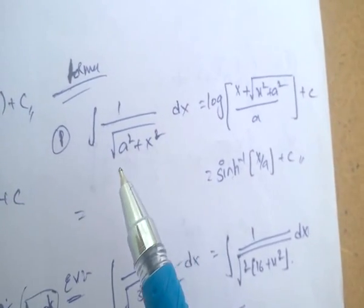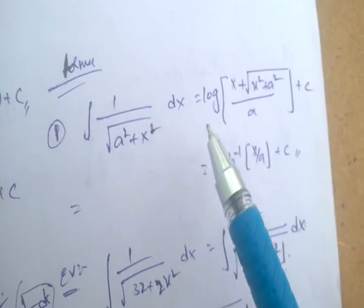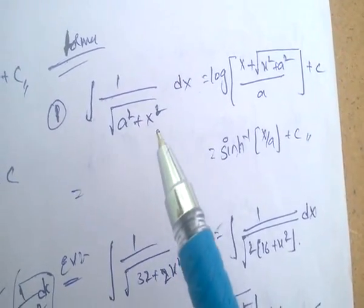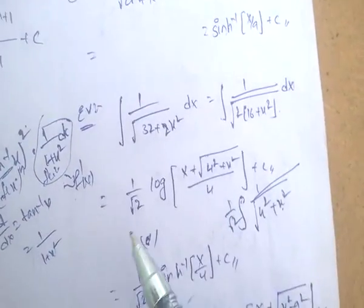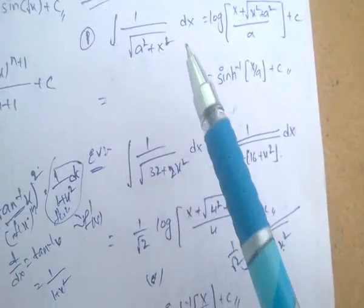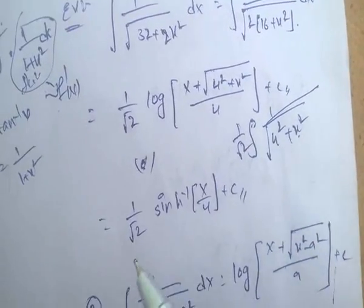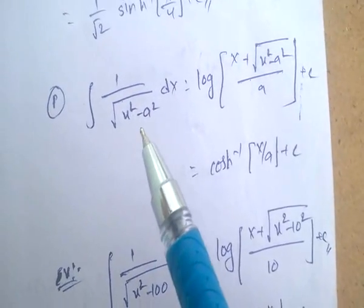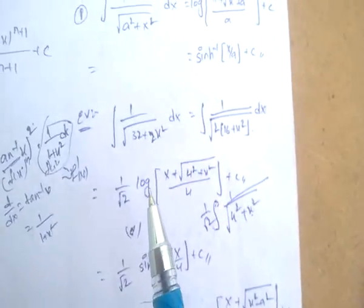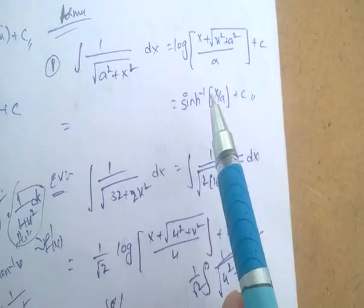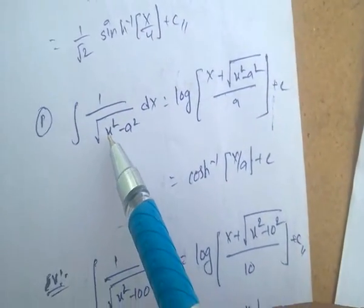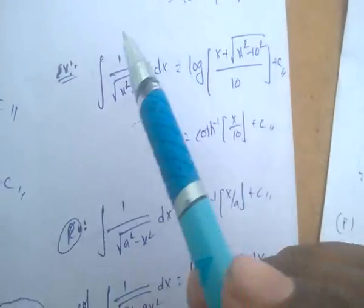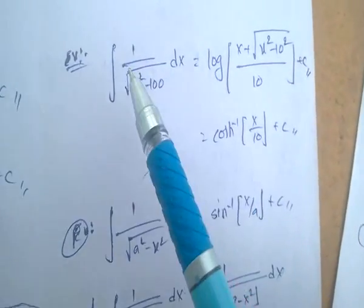Integral of 1 by root of (a² + x²) dx equals log(x + root of (x² + a²)) / a or sinh⁻¹(x/a). Integral of 1 by root of (a² + x²) equals sinh⁻¹(x/a). And integral of 1 by root of (x² minus a²) equals cosh⁻¹(x/a). One example problem is based on these formulas.